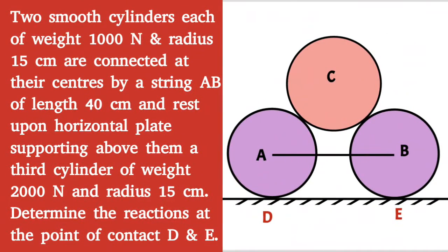Given question: two smooth cylinders each of weight 1000 N and radius 15 cm are connected at their centers by a string AB of length 40 cm and rest upon a horizontal plate, supporting above them a third cylinder of weight 2000 N and radius 15 cm. Determine the reactions at point of contact D and E.